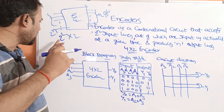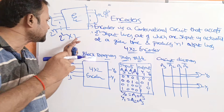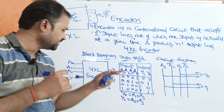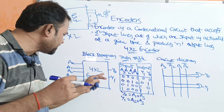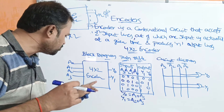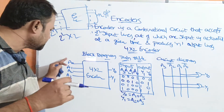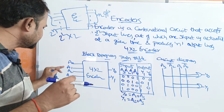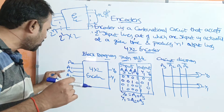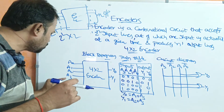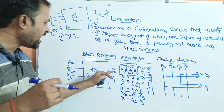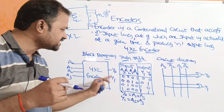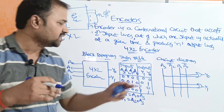When n equals 2, we have 2^2 = 4 input lines and 2 output lines. This is the block diagram of the 4 by 2 encoder. It accepts 4 inputs — A0, A1, A2, A3 — and produces 2 outputs: Y0 and Y1.